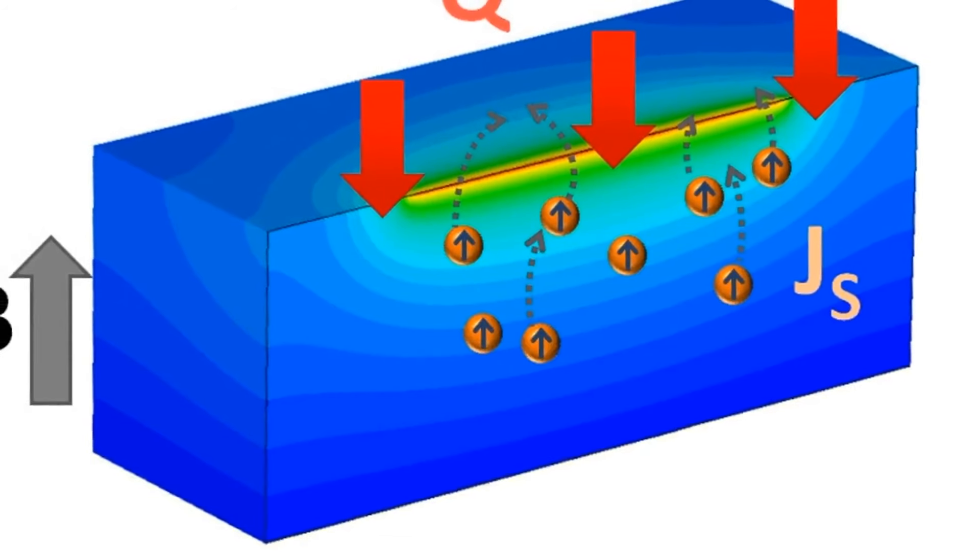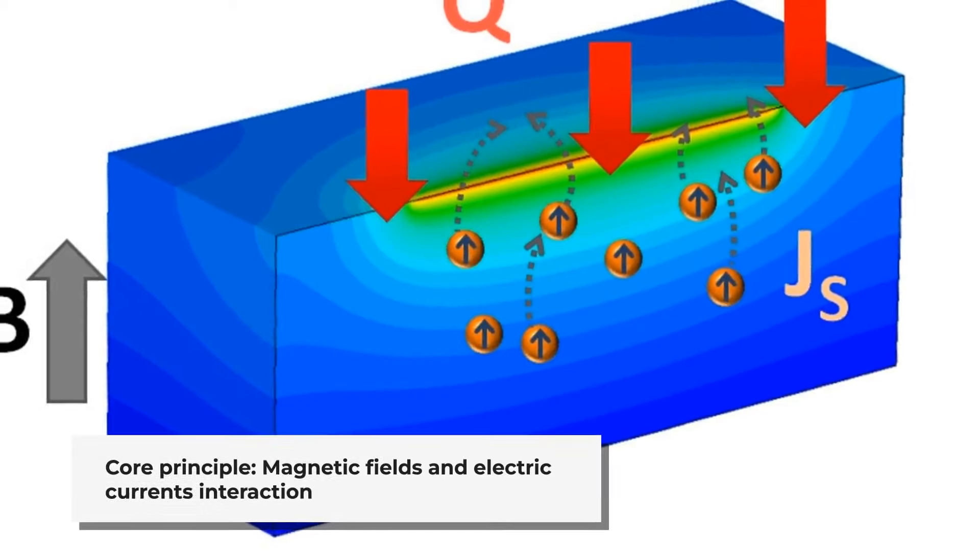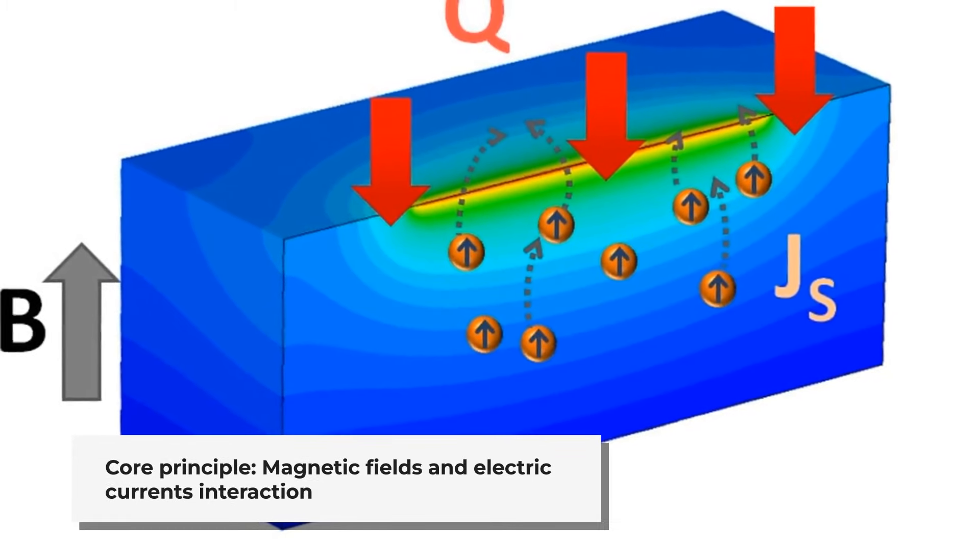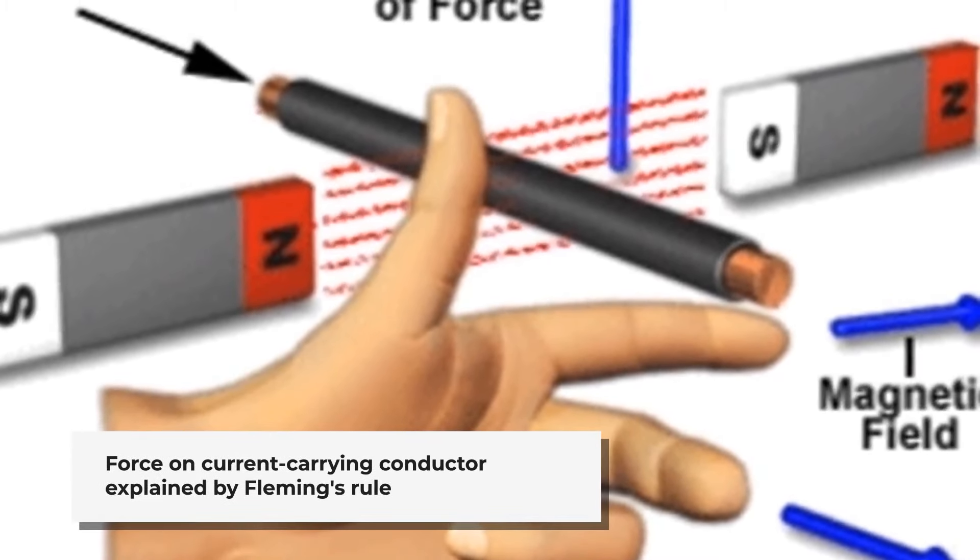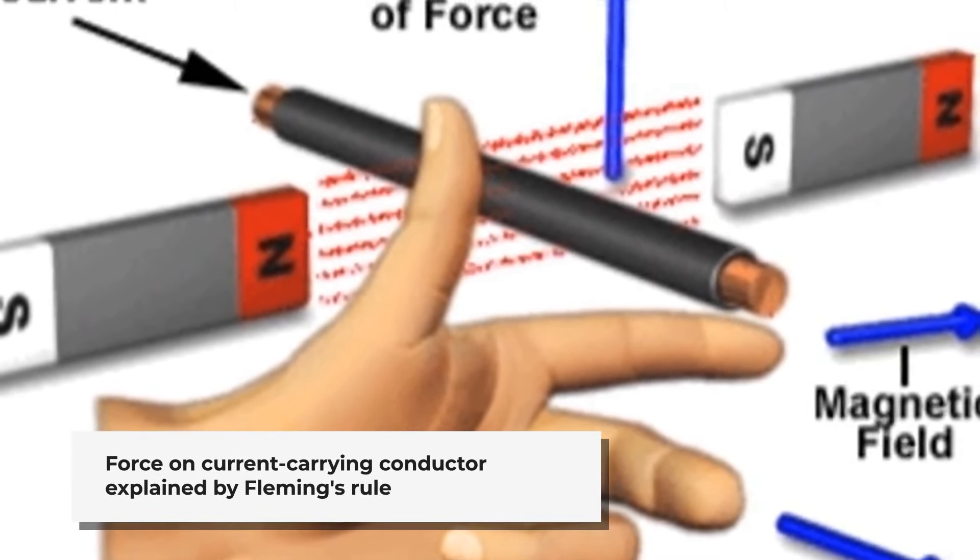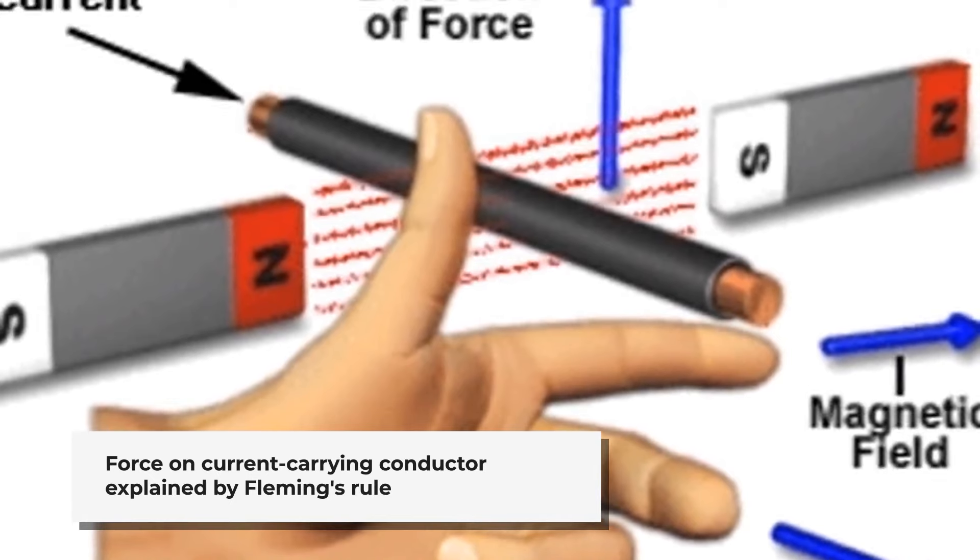At the heart of the PMMC instrument is the principle of interaction between magnetic fields and electric currents. When a current-carrying conductor is placed within a magnetic field, it experiences a force, a phenomenon explained by Fleming's left-hand rule.